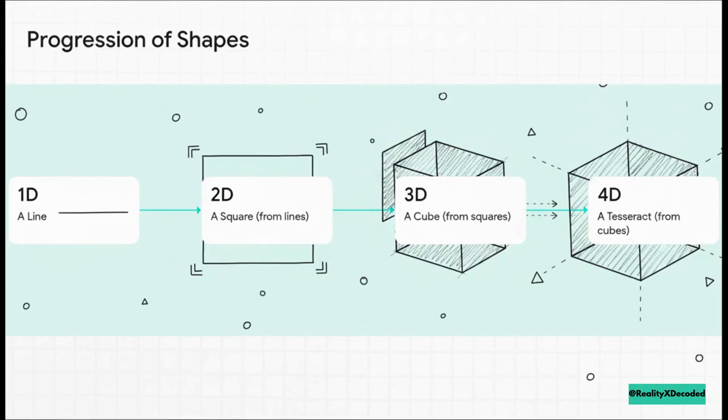We can see this exact same progression with geometry. It's really simple. In 1D, you have a line. Now, connect four lines at perpendicular angles, and you get a 2D square. Great. Take six squares and fold them up so all the sides are perpendicular. You get a 3D cube.